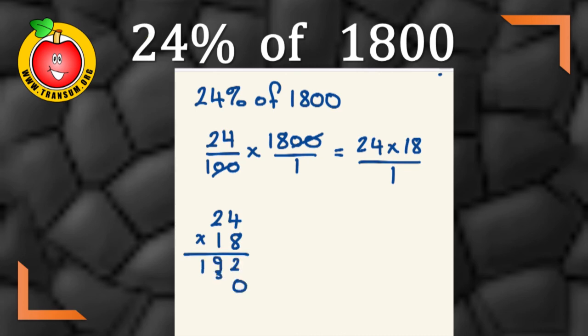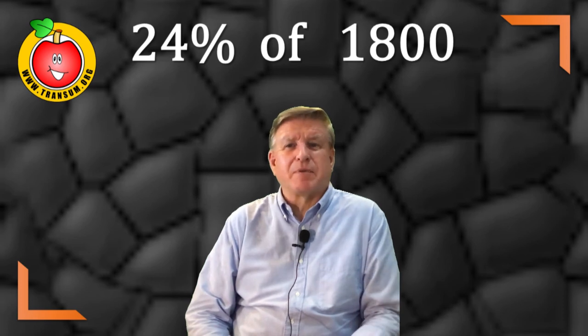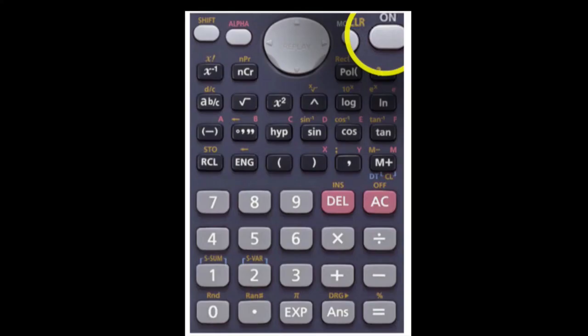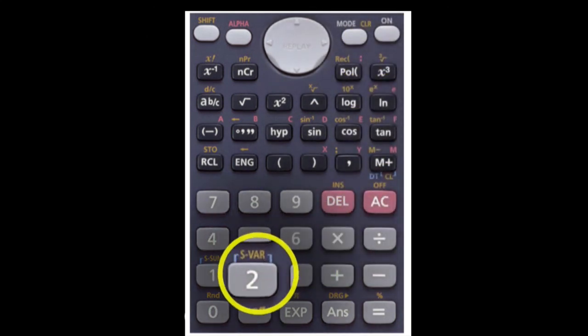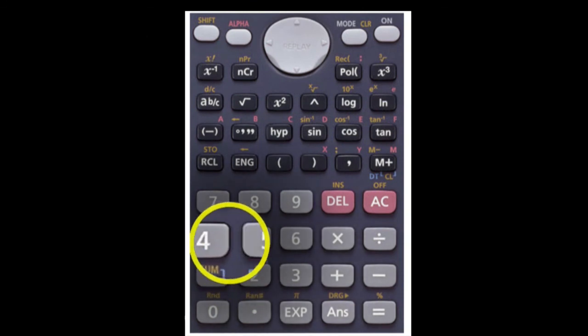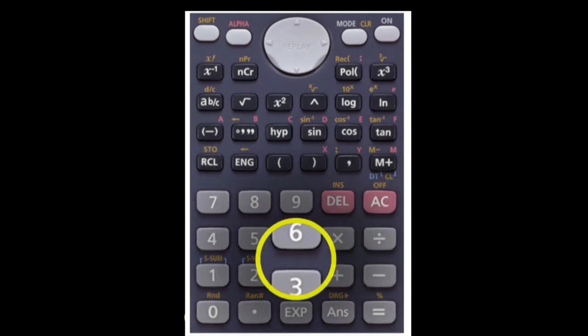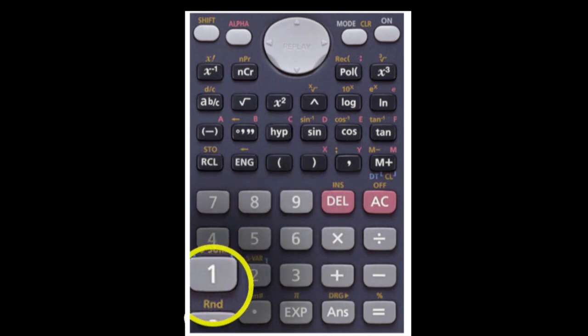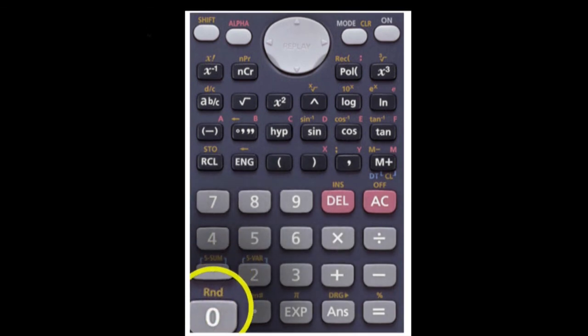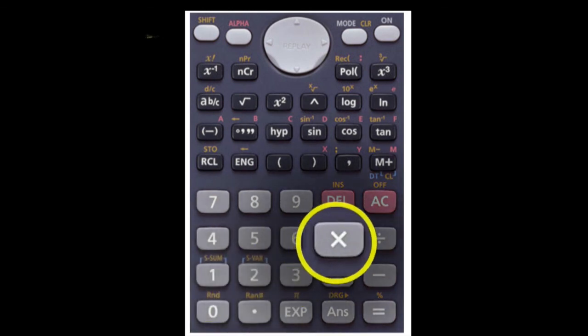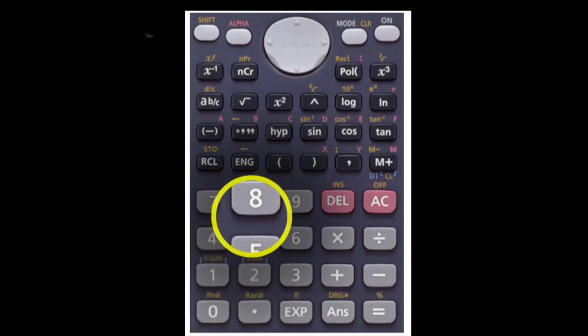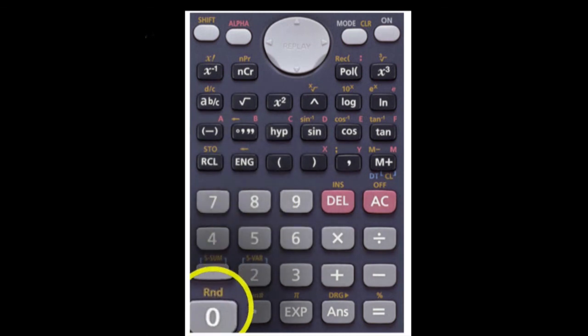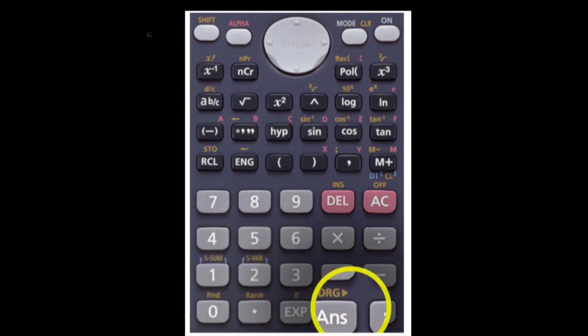But of course, in this day and age, you probably will have a calculator with you most of the time, because there's a calculator on most phones. So one little tip I've got for using the calculator is I have always managed to avoid using the percent button, because I think it's healthier to think of percentage as being out of 100. So on a calculator, to work out 24% of 1800, I would do 24, divide by 100 and then multiply by 1800 in order to get the answer.